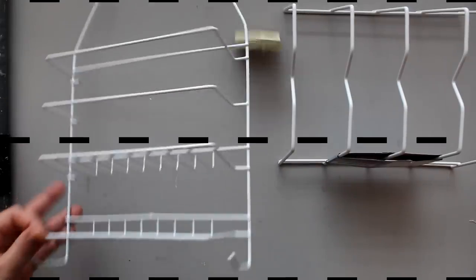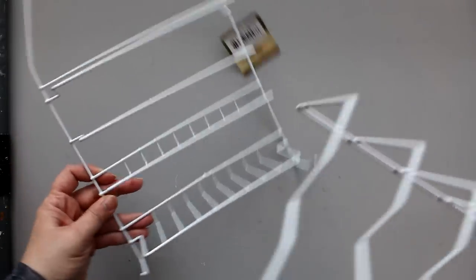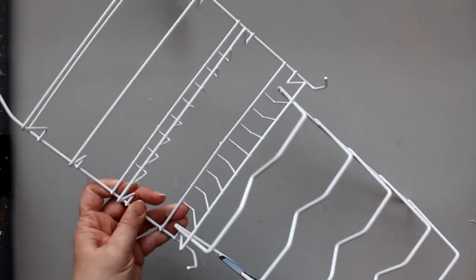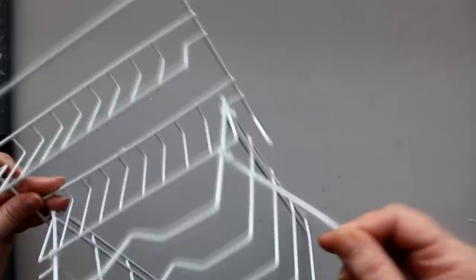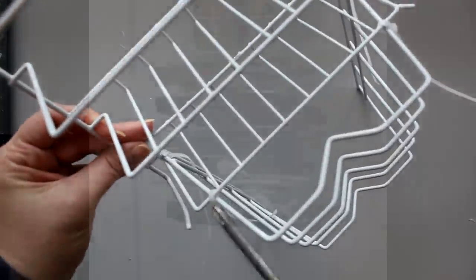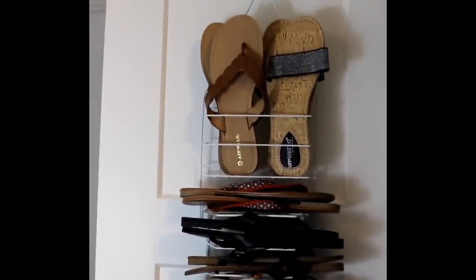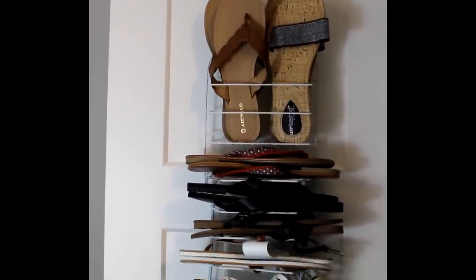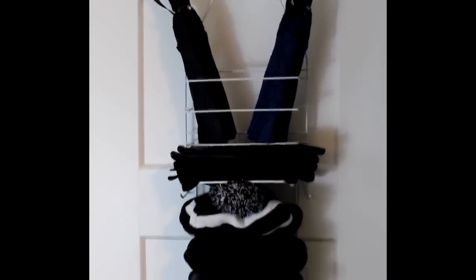Another great organizer combo is the caddy along with the Dollar Tree dish rack. All I'm doing here is attaching again the two pieces together with zip ties. And I did attach the rack to the bottom shelf and I did use two zip ties to each side. And then this combo makes a great organizer for flip flops and flat sandals. It also makes a great option to store items like hats, gloves, and umbrellas.